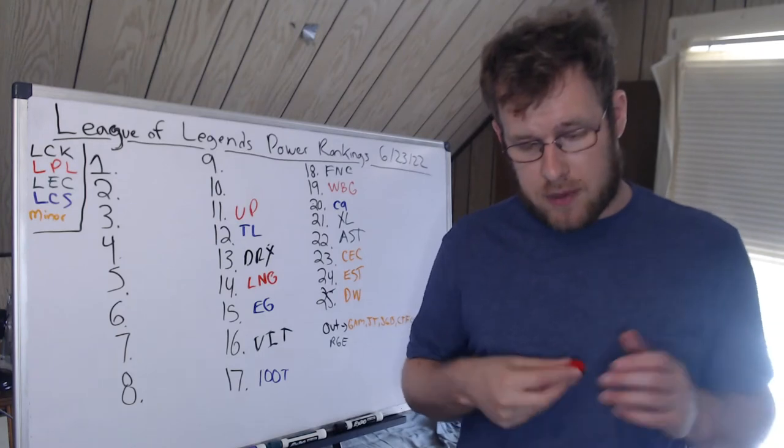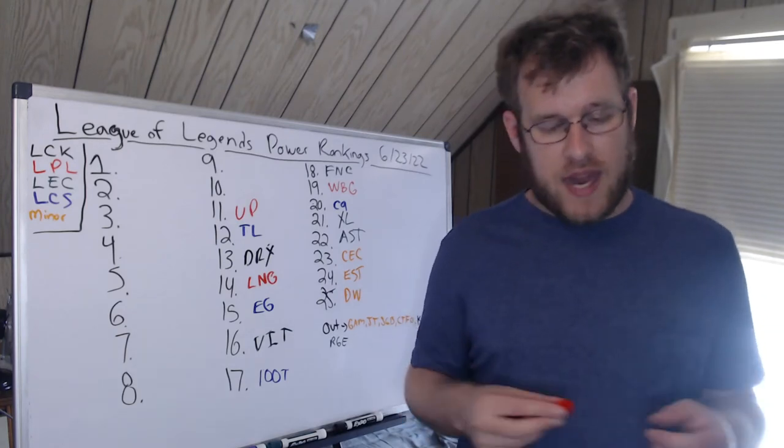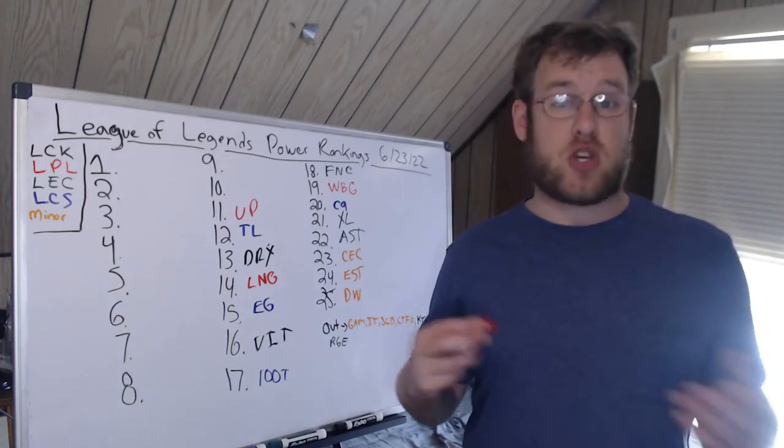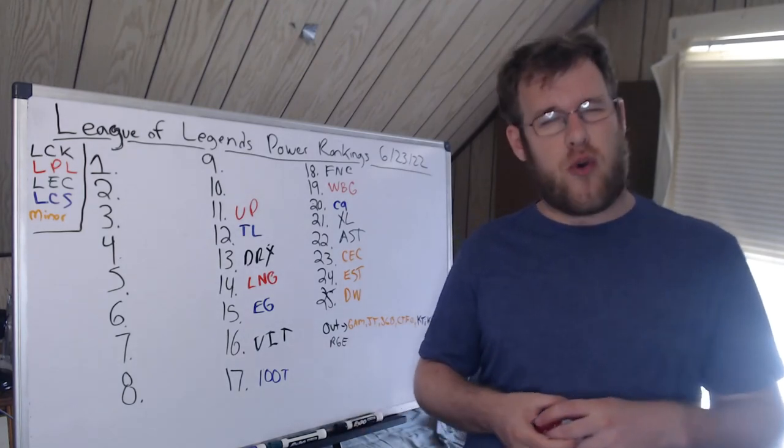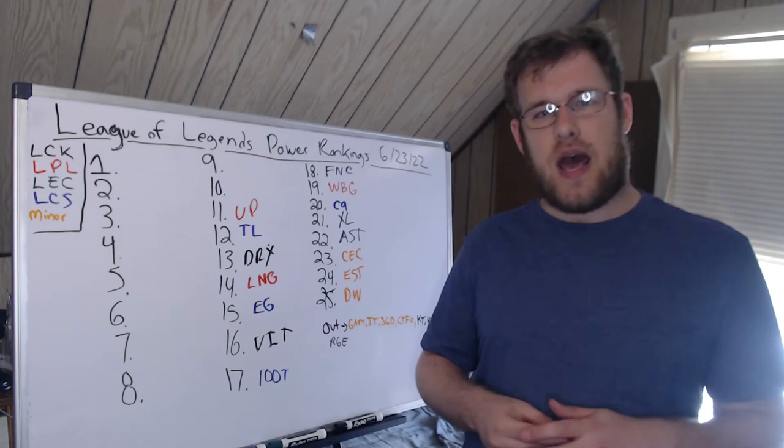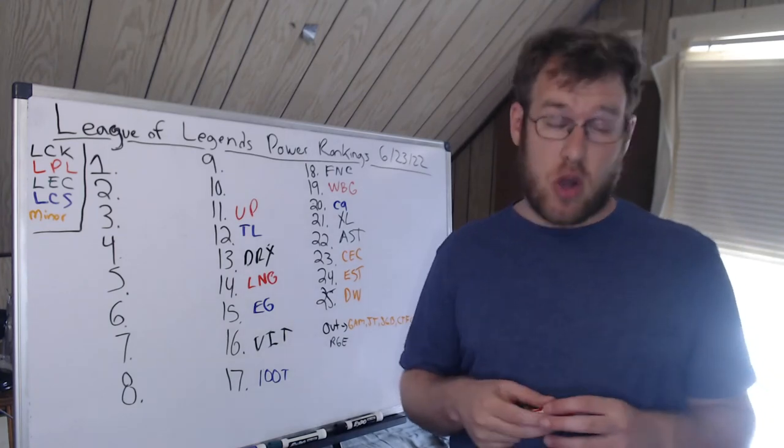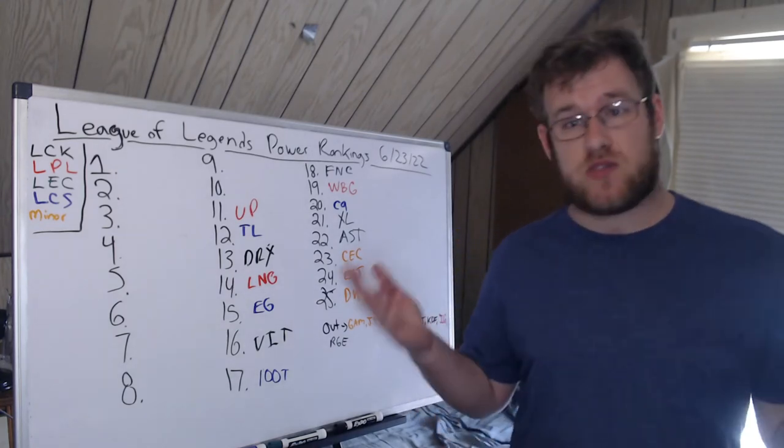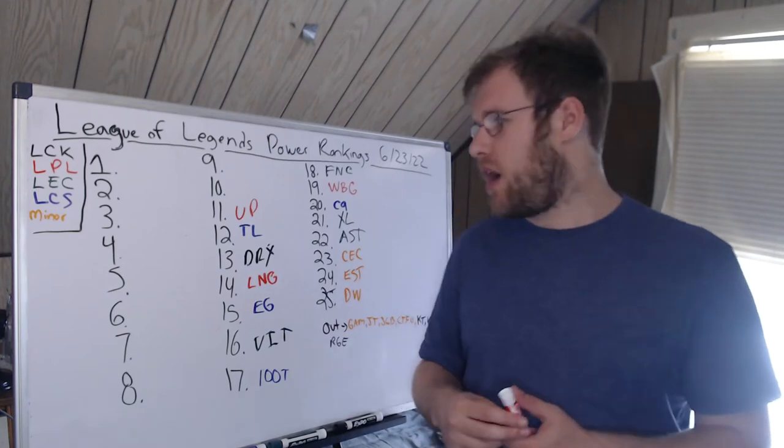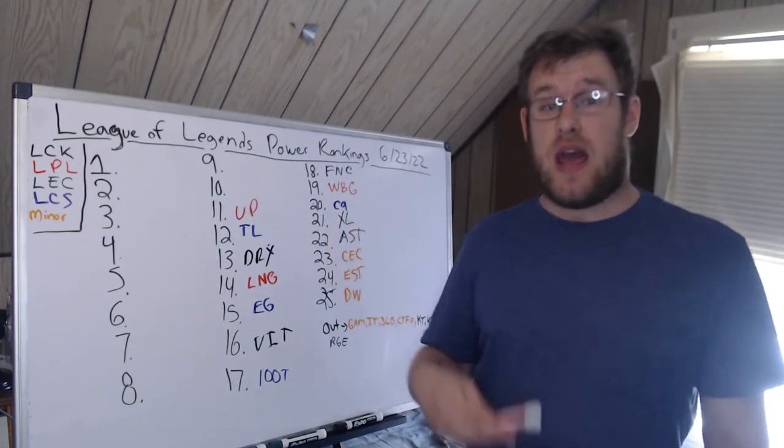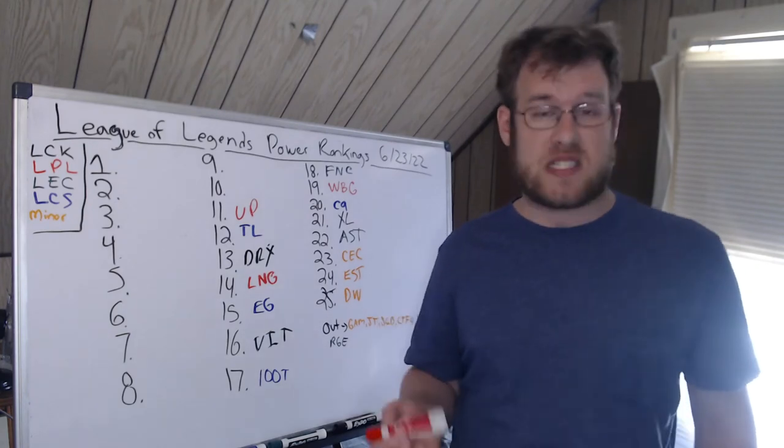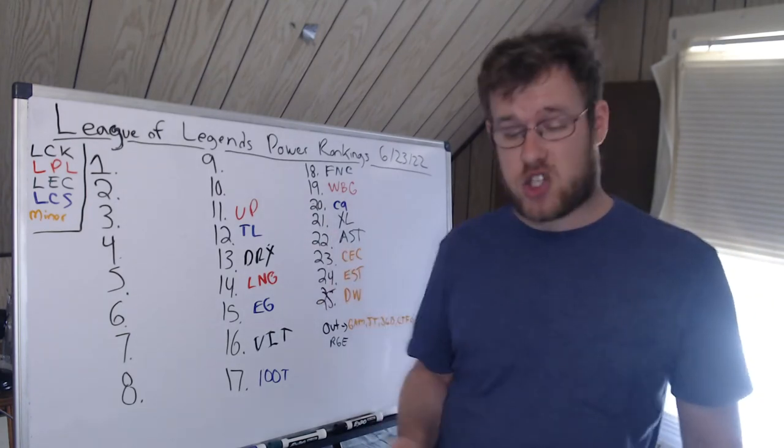Ultra Prime are 2-1. They beat Rare Atom last week. Ultra Prime has looked really good with Zoom in top. Cryin's in mid, Hacker has looked okay actually. Elk is very good. Elk has always been very good, so Ultra Prime are 11th. I really like Elk, and I hope that the solo lanes continue to perform and this team might actually be a playoff team.